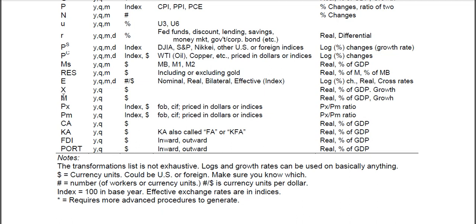You have exports and imports, which are GDP components, usually yearly and quarterly, and could be in currency value. You can do the same transformations — real exports, exports as a percentage of GDP, or growth in exports. One measure I didn't mention is exports plus imports as a percentage of GDP, which is a measure of trade openness.